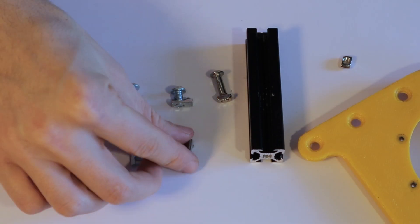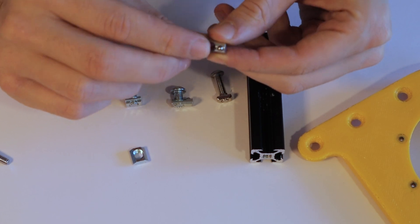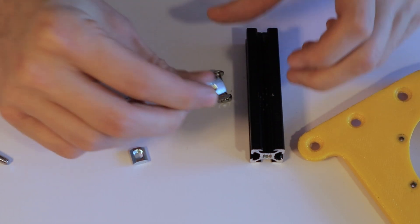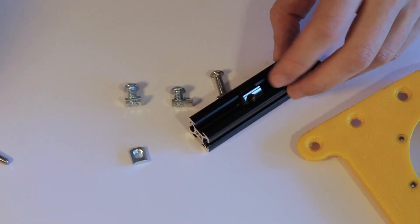So instead I chose to go for the roll-in nuts, and the roll-in nuts have a ball spring on the ends that make it lock in place and you can roll them in from the side of a profile.